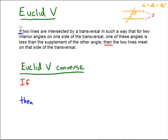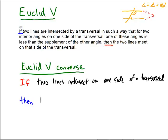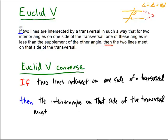Then what's going to happen? Then the interior angles on that side of the transversal must be less than 180. They must be less than one being the supplement of the other, which means that they must be less than 180 degrees.